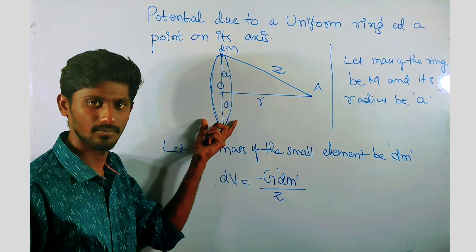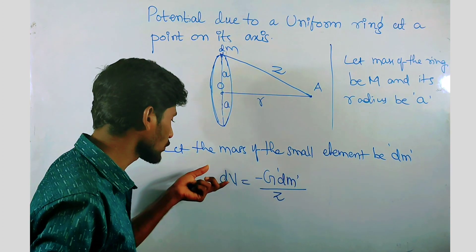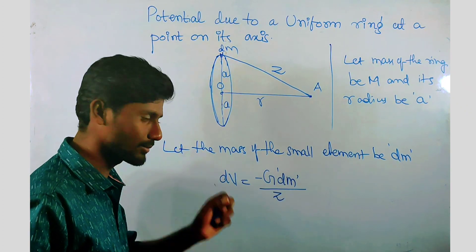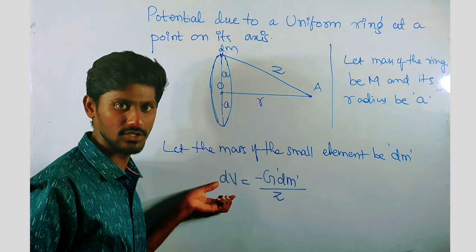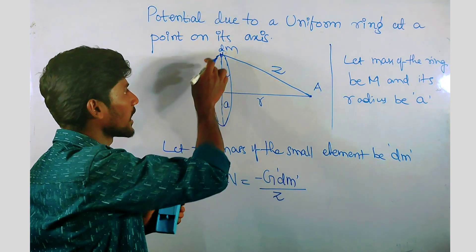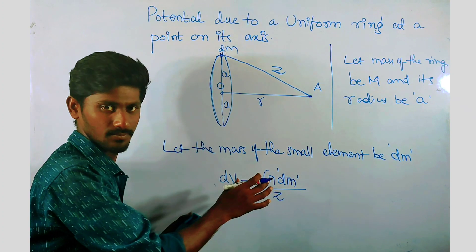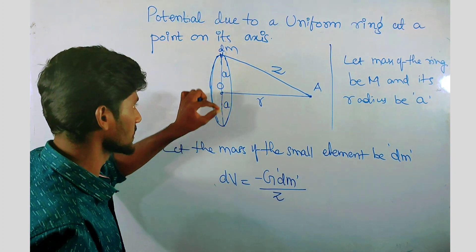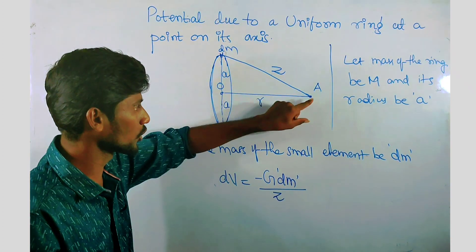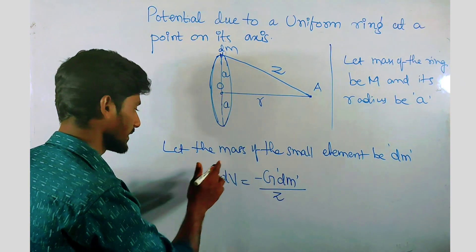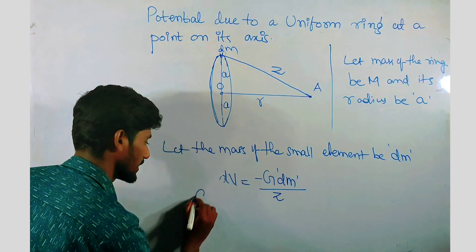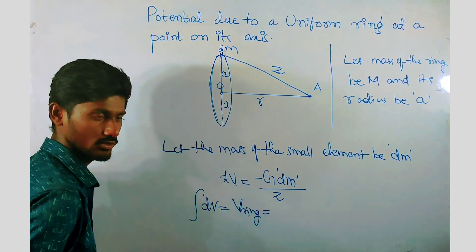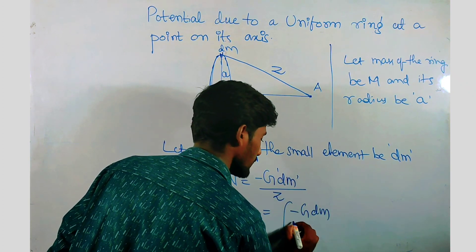Now how can we find the potential due to the whole ring? We have to integrate over this small element. When we integrate dm, we are adding the potential due to all the small elements on this ring to get the total potential. So V due to ring equals the integral of -G·dm/z.